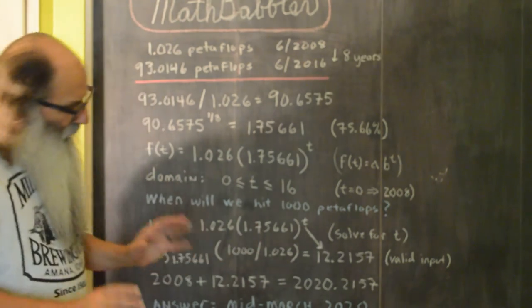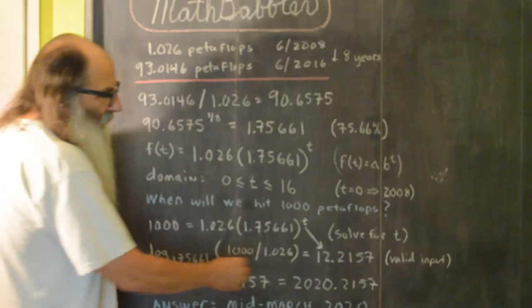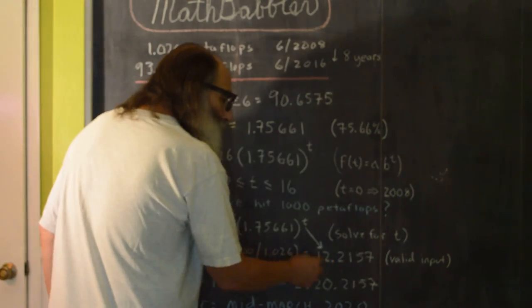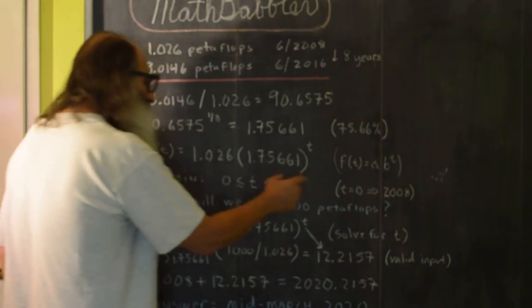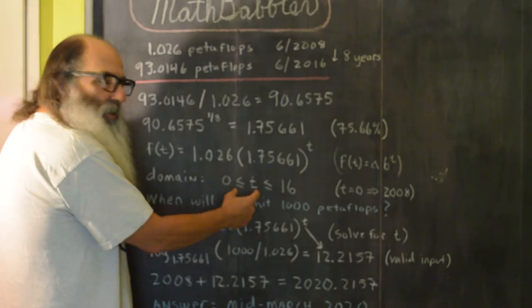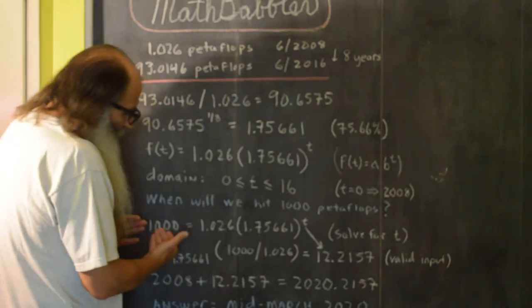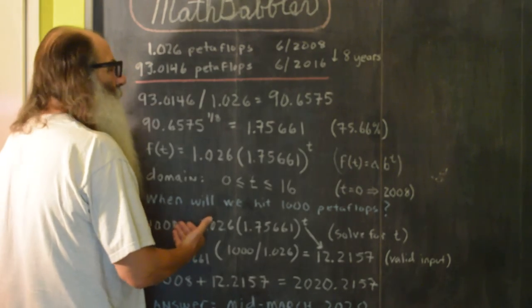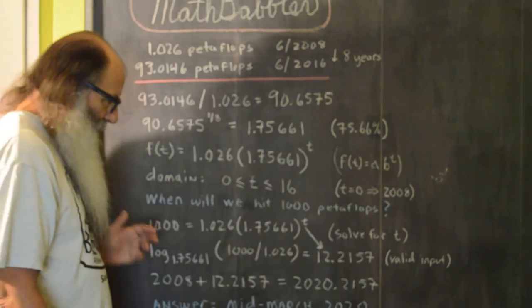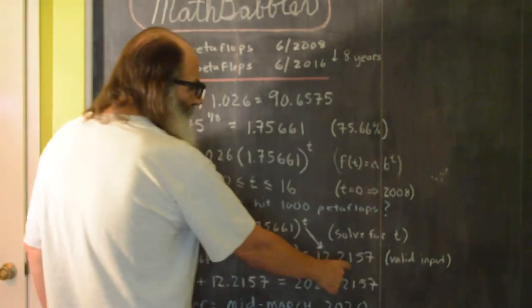And I just realized that I should have mentioned that when we calculated our t value, that the t value did fall within the domain of our function. So that means that we will hit a thousand before the year 2024, because this is a valid input.